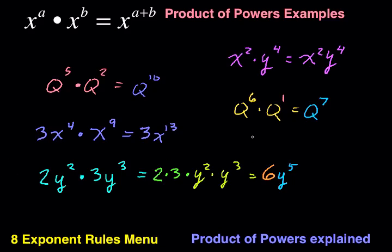And we could try one more example. x times x to the tenth. And again, we're going to just pretend there's a one here. x to the one times x to the tenth. One plus ten is eleven. The answer is x to the eleventh power.